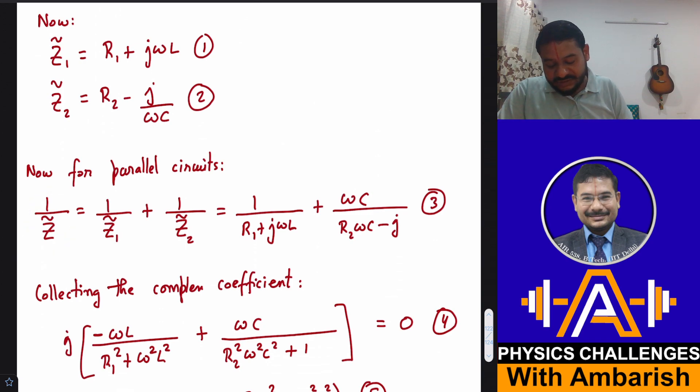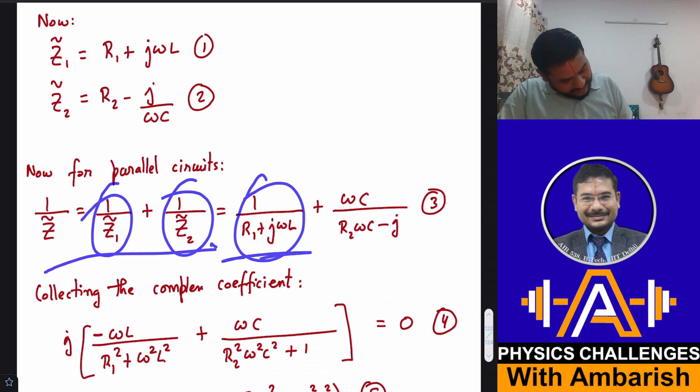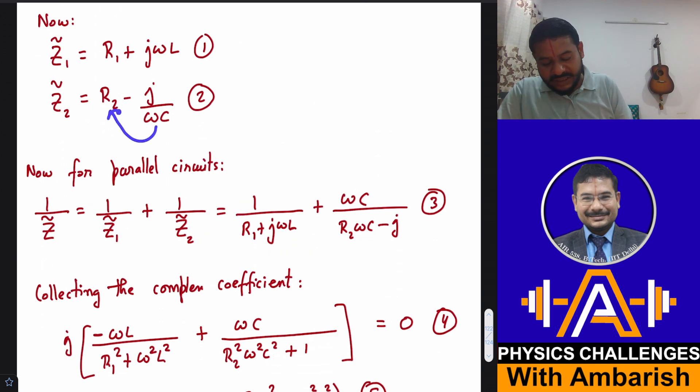So for parallel circuits, 1 by Z complex is 1 by Z1 complex plus 1 by Z2 complex. So 1 by R1 plus J omega L plus omega C divided by omega C R2 minus J. And its reciprocal becomes omega C divided by omega C R2, that is this, and minus J.